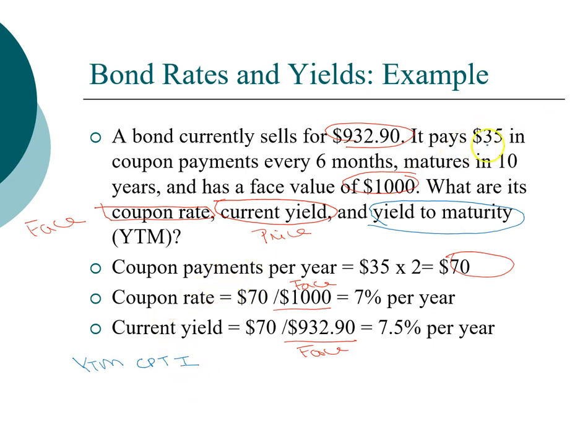We know that the coupon payment is $35, so $35 is the annuity coupon payment. The face value at maturity is $1,000. This bond has 10 years left to maturity, but it's a semi-annual bond. So we have 10 times 2, paid twice per year, so our N is 20.